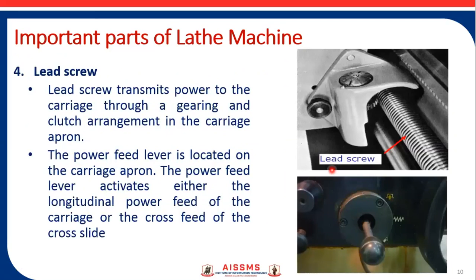The next important part is the lead screw. The lead screw transmits power to the carriage through a gearing and clutch arrangement in the carriage apron, so the function of the lead screw is power transmission to the carriage. The power feed lever is located on the carriage apron and activates either the longitudinal power feed of the carriage or the cross feed of the cross slide.